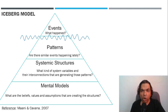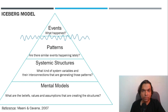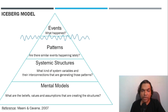Once you know what happened, at the patterns level you ask: are there similar events happening lately? To understand what kind of structures are giving rise to those patterns, at the systemic structures level you ask: what kind of system variables and their interconnections are generating those patterns? Then, to see how such systems exist, at the mental models level you ask: what are the beliefs, values and assumptions that are creating the structures?